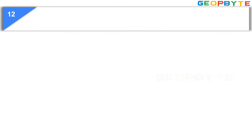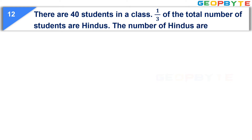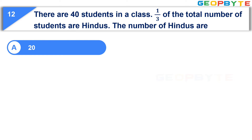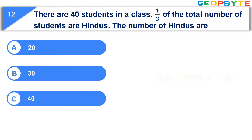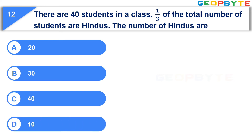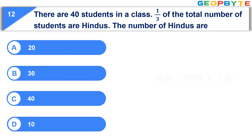Moving to the twelfth question. There are forty students in a class. One by three of the total number of students are Hindus. The number of Hindus are: option A, twenty; option B, thirty; option C, forty; option D, ten. Your time starts now. Your time is up and the correct answer is option A, twenty.